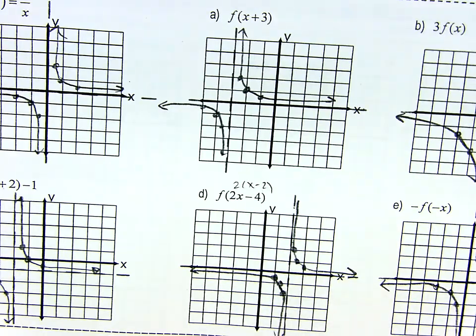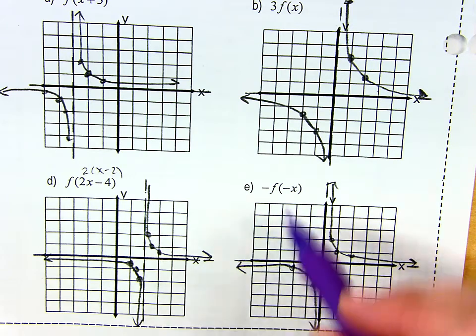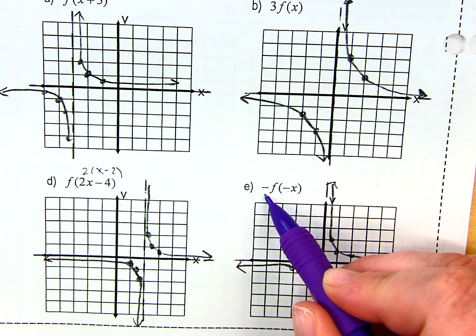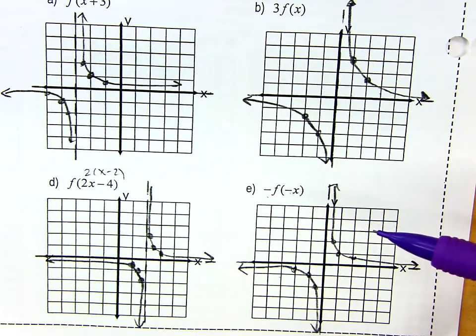And then E is a weird one, because we're just... That tells me to flip it over your y-axis, and then this tells me to flip it over the x-axis. So you're doing both, so you end up with an image exactly like the original.